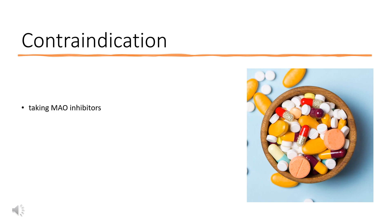Patients taking MAO inhibitors can experience a severe hypertensive crisis if given a sympathomimetic drug such as Naphazoline HCl. Drug interactions can occur with anesthetics that sensitize the myocardium to sympathomimetics, such as cyclopropane or halothane — use cautiously. Exercise caution when applying prior to use of phenylephrine.